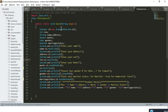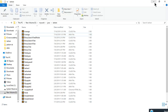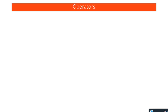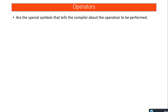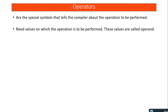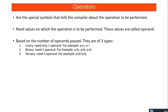Now let's start with operators. Operators are special symbols that tell the compiler about the operation to be performed — for example plus, minus, multiply, divide, less than, greater than. Every operator needs some values called operands: in 'a + b', a and b are the operands and + is the operator. Based on how many operands are passed, there are three types: unary (one operand), binary (two operands), and ternary (three operands). Generally there are eight types of operators in Java.